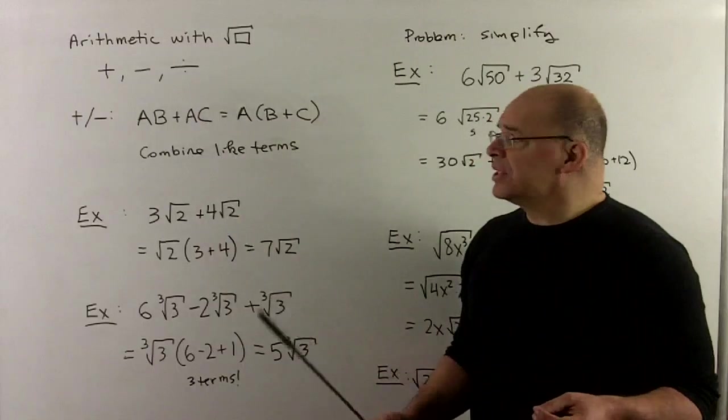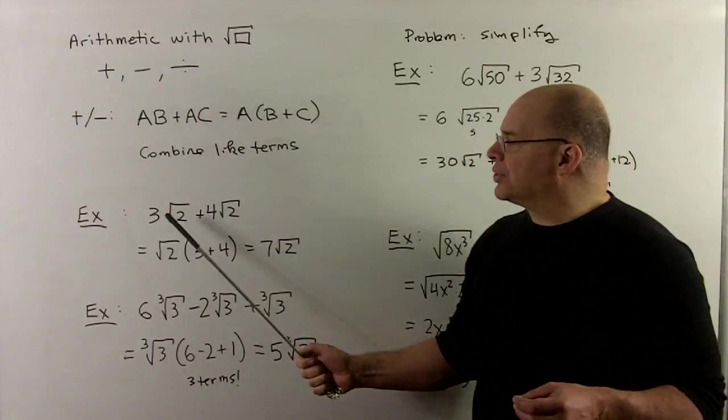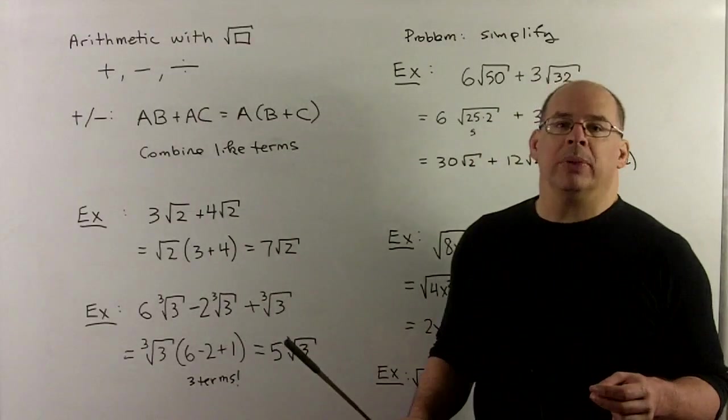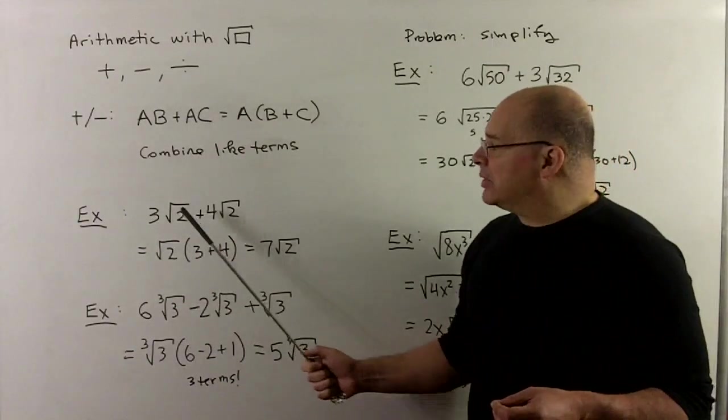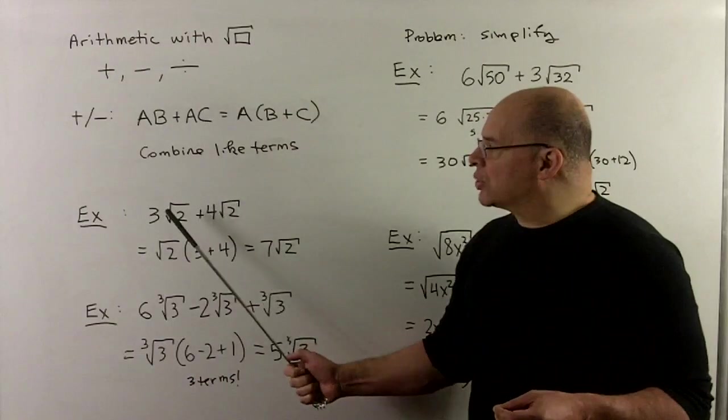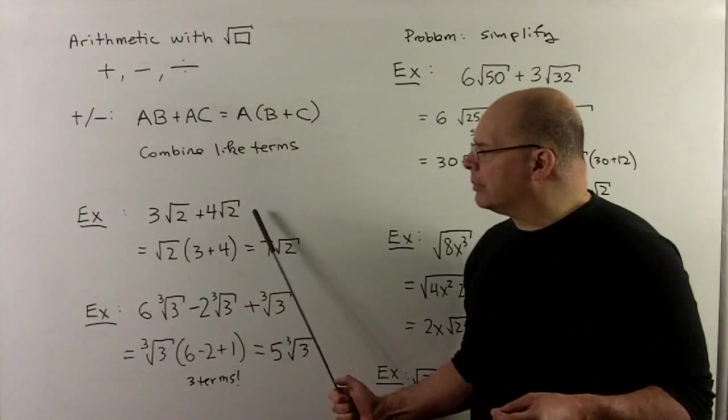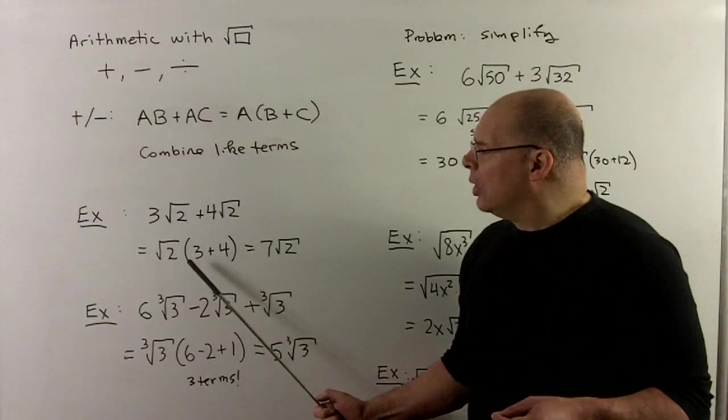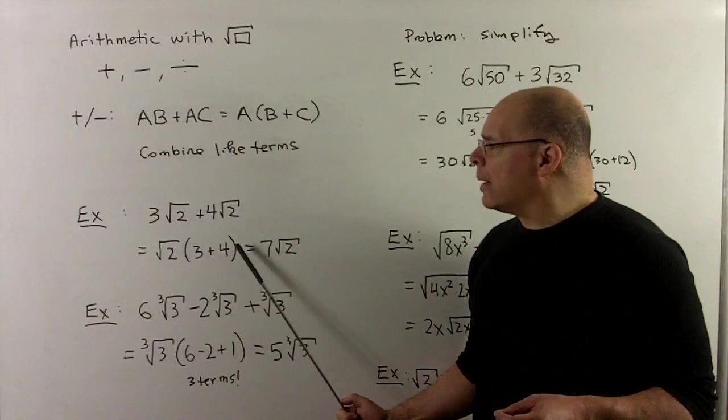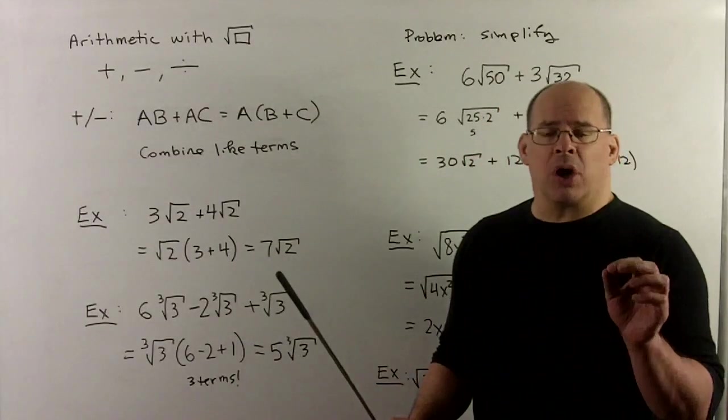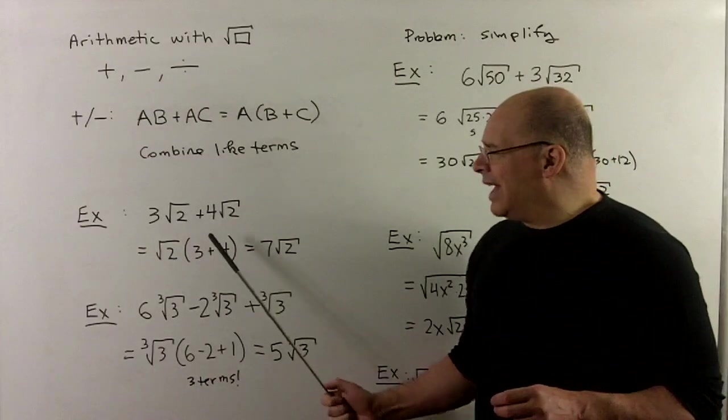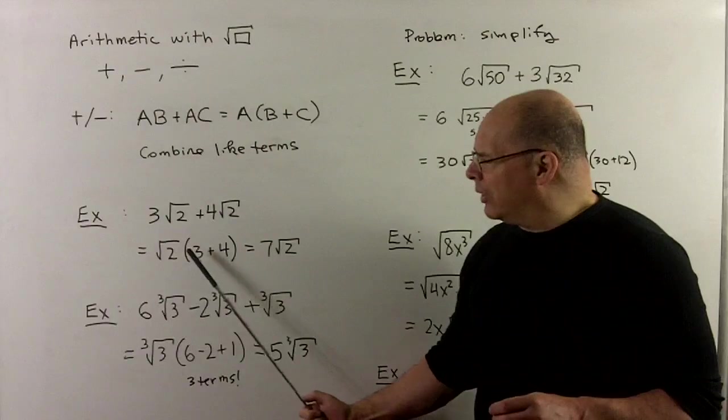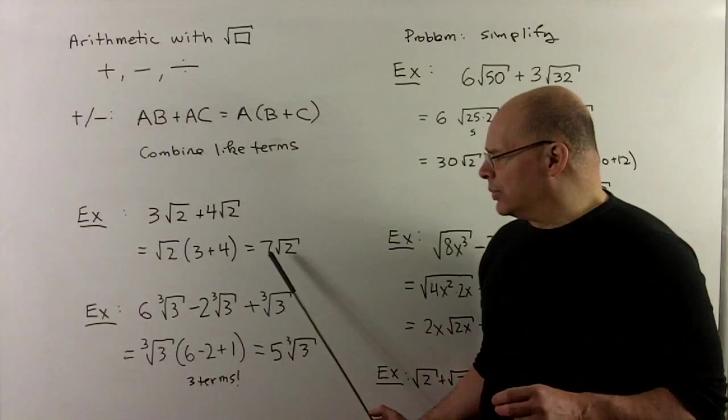For instance, if I take 3√2 plus 4√2, this is 3 oranges plus 4 oranges, we get 7 oranges. But to do it formally, we note we've got a √2 in common to both terms, so we pull that out. What's left over is a 3 plus 4. Note, if I start with two terms, I should have two terms in the parentheses. And then we're going to wind up with, we just add, we get 7√2.